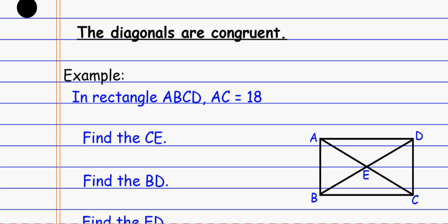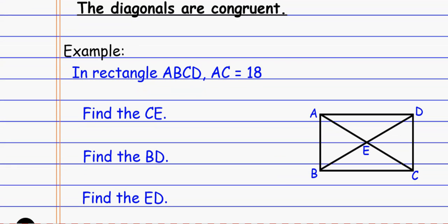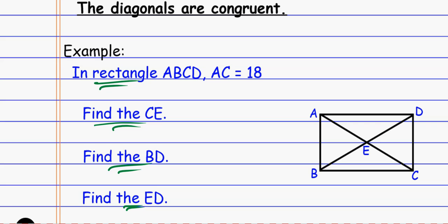For example, in rectangle ABCD, it says that AC is 18. That's one of my diagonals — this whole diagonal AC is 18, the whole way across. And so if I want to find some of the missing pieces, I know it's a rectangle because it's labeled that way. We want to find CE, BD, and ED.